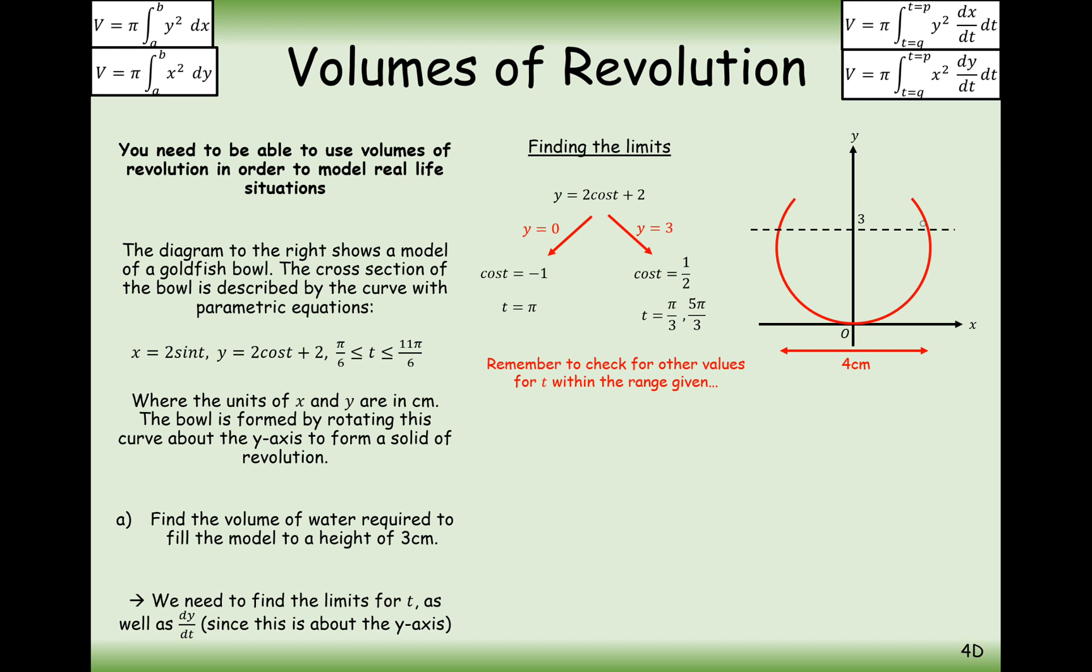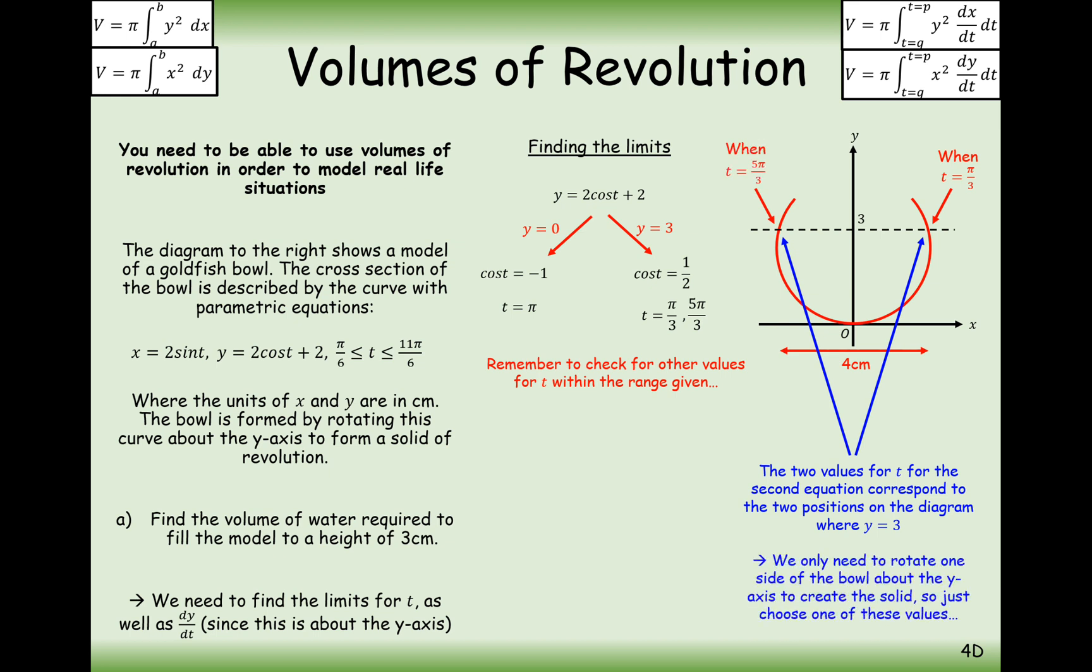It will happen maybe up here on the right-hand side and then up here on the left-hand side. You'd have to work out what the x-coordinate is to work out whether it's left or right. The two values for t for the corresponding second equation correspond to the two positions where we have on the diagram y equals 3. Either here or here. This one here is when t equals π/3. We could tell that by plugging π/3 into the x equation, 2 sine π/3. That would be √3, so this will be x-coordinate of √3. But then when you plug in 5π/3, you'll get minus √3 on this side here as the x-coordinate.